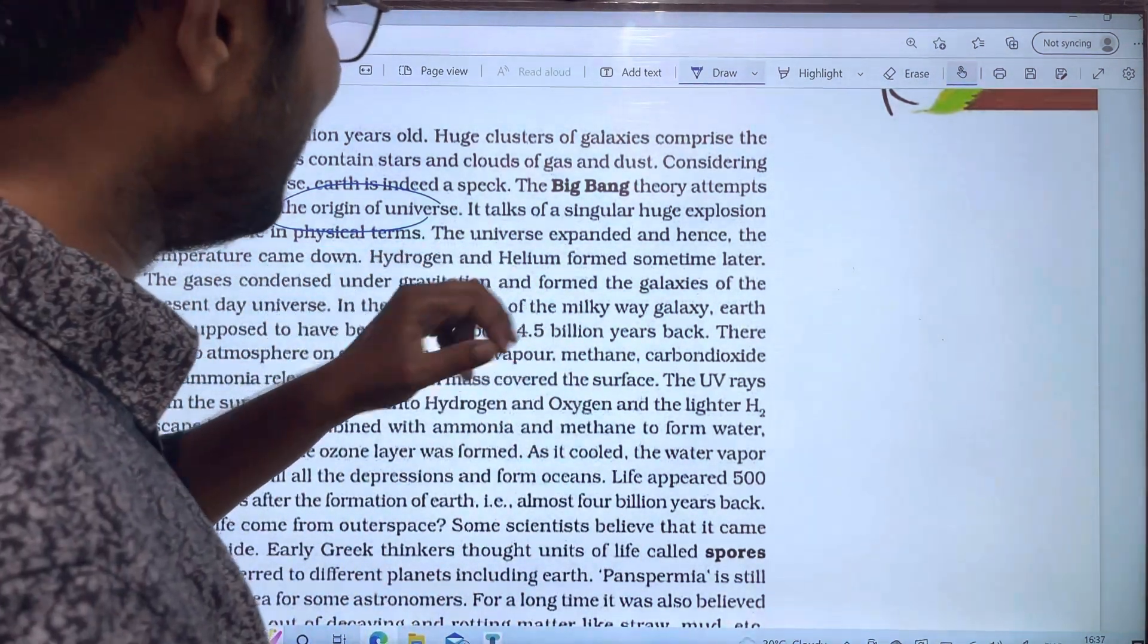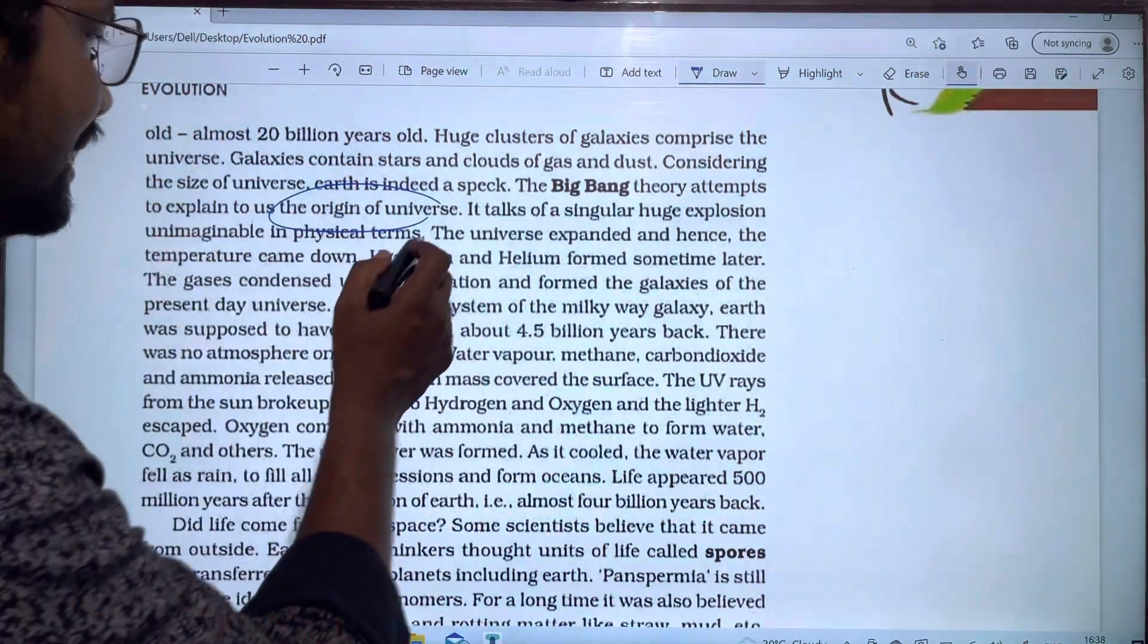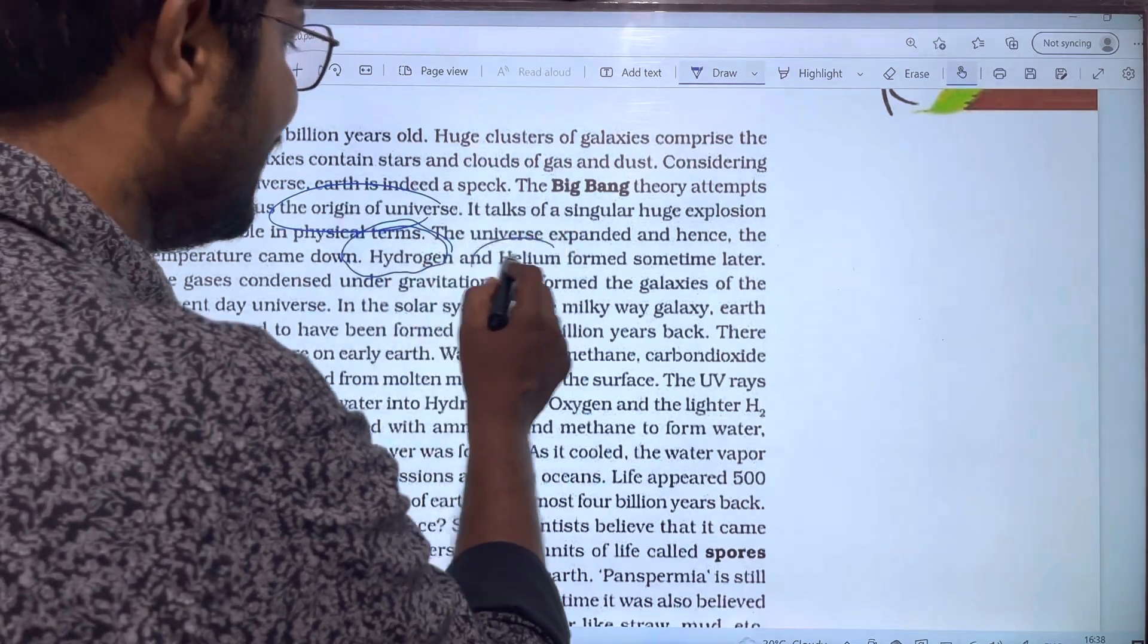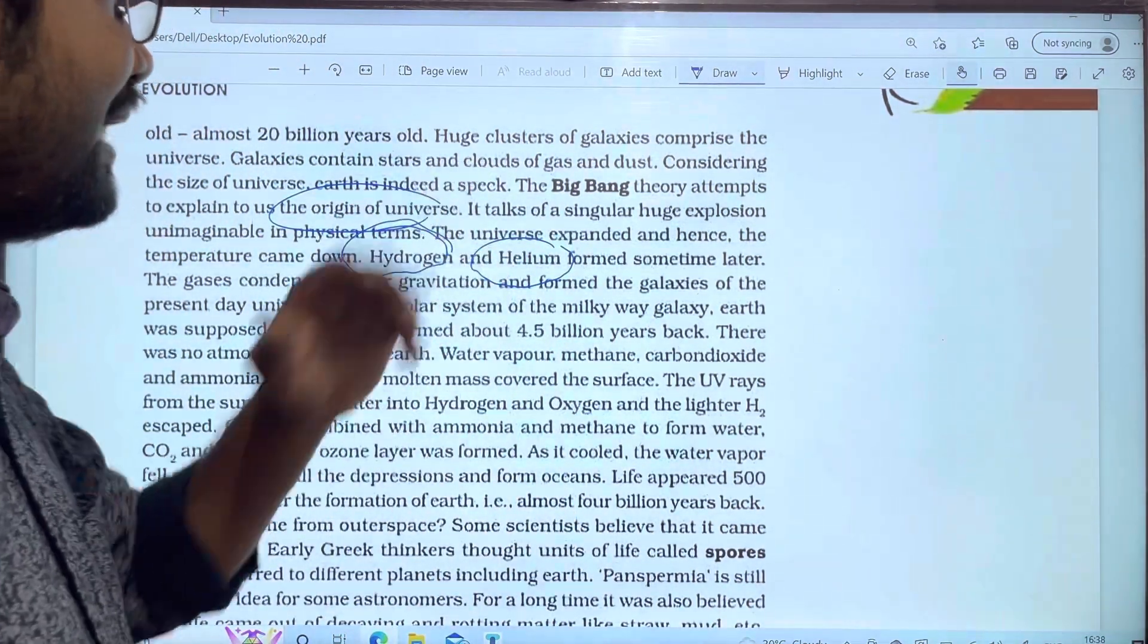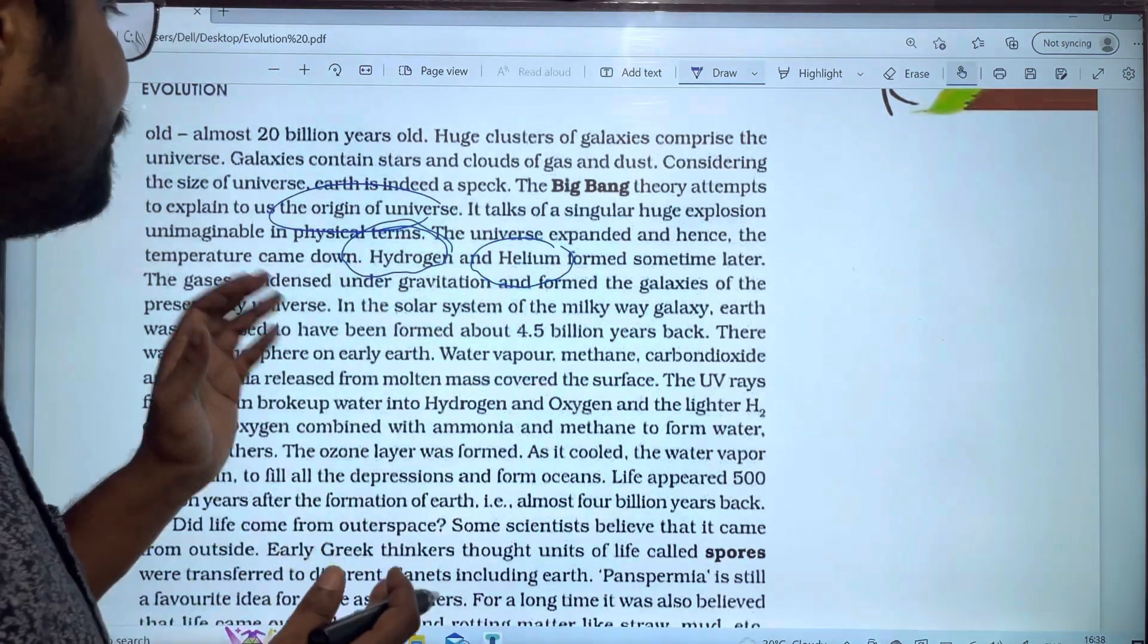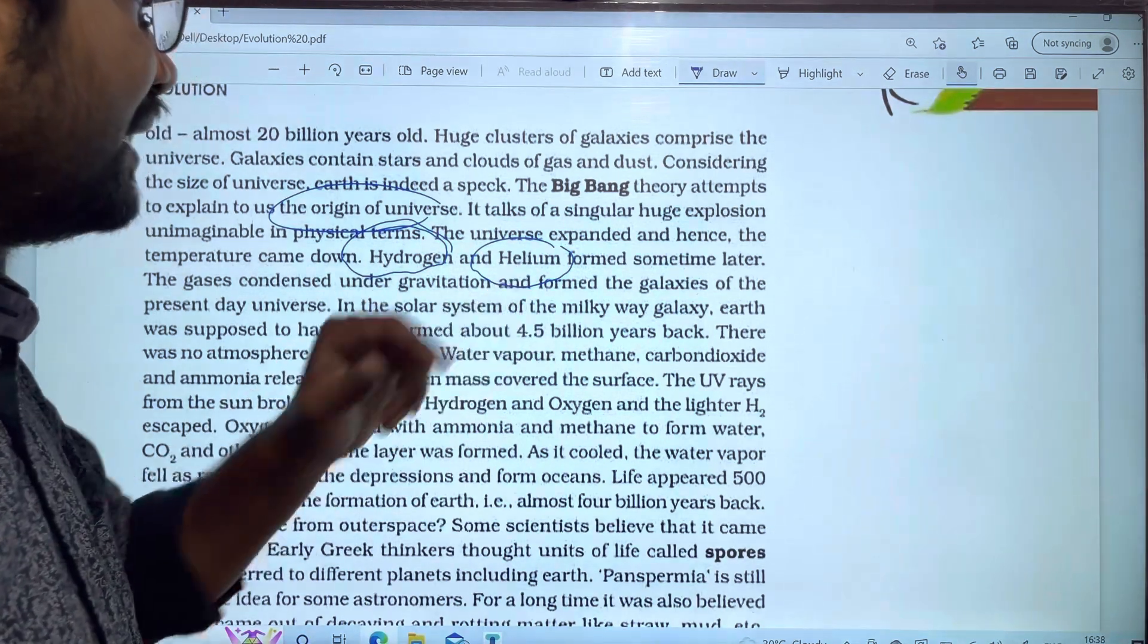Hydrogen and helium form sometime later. Cool is the first state of hydrogen form and helium form. When you're doing Big Bang theory, the first form is temperature down, hydrogen form and helium form.